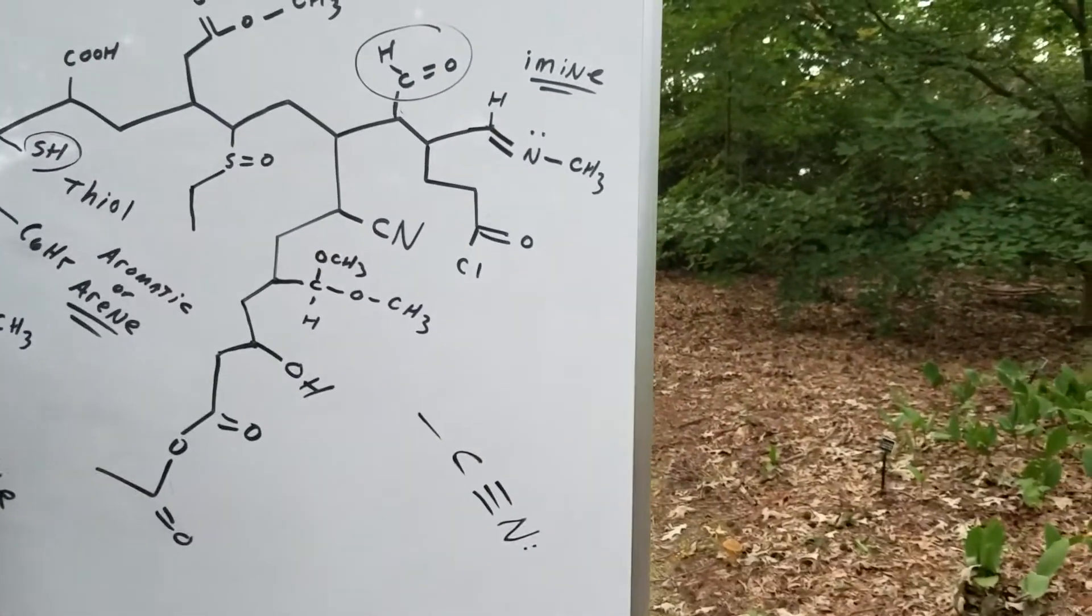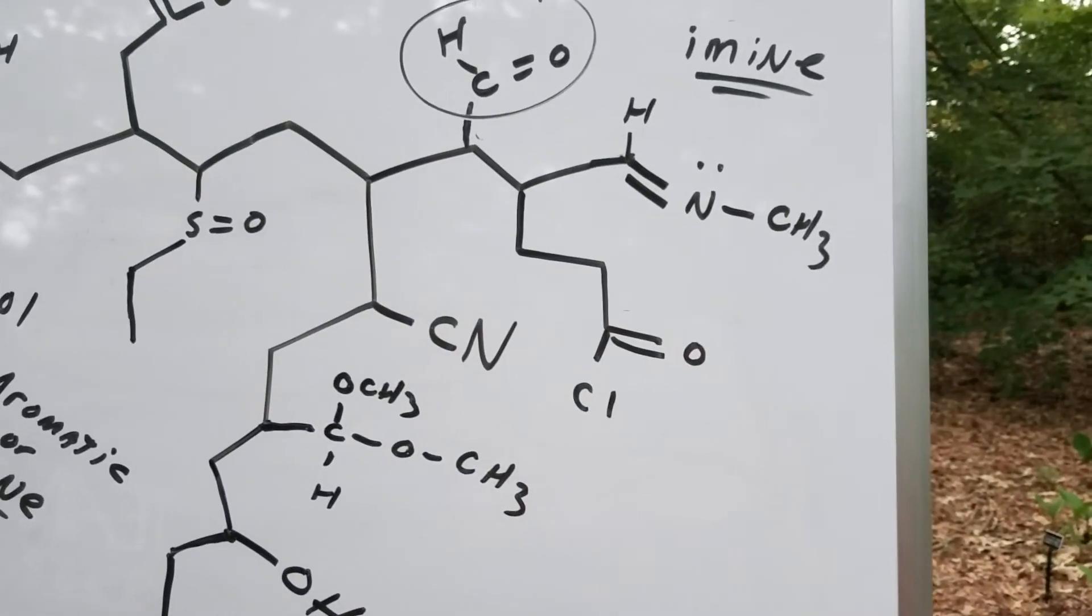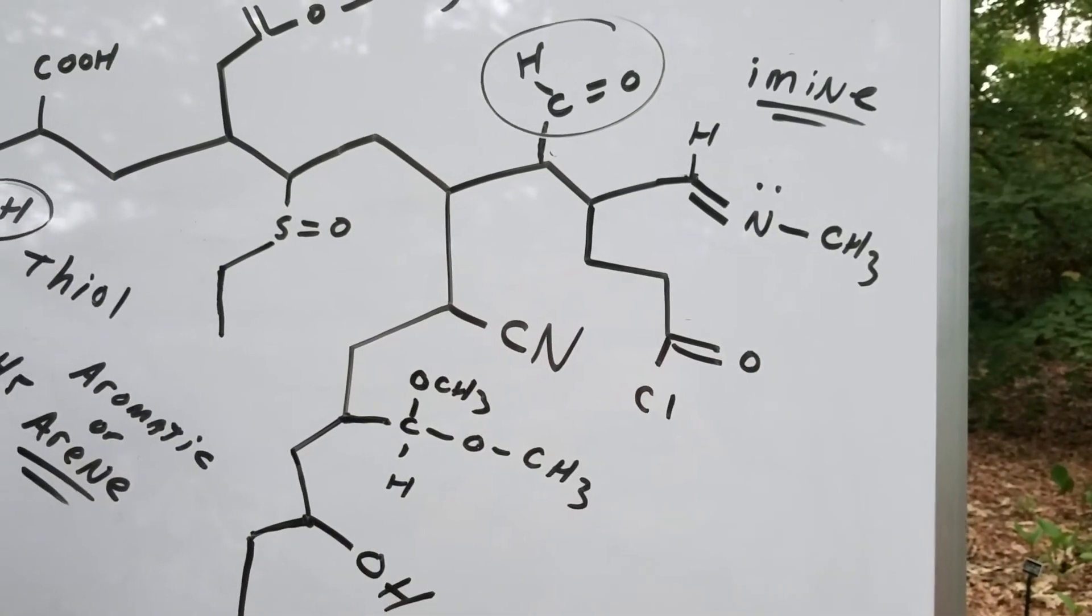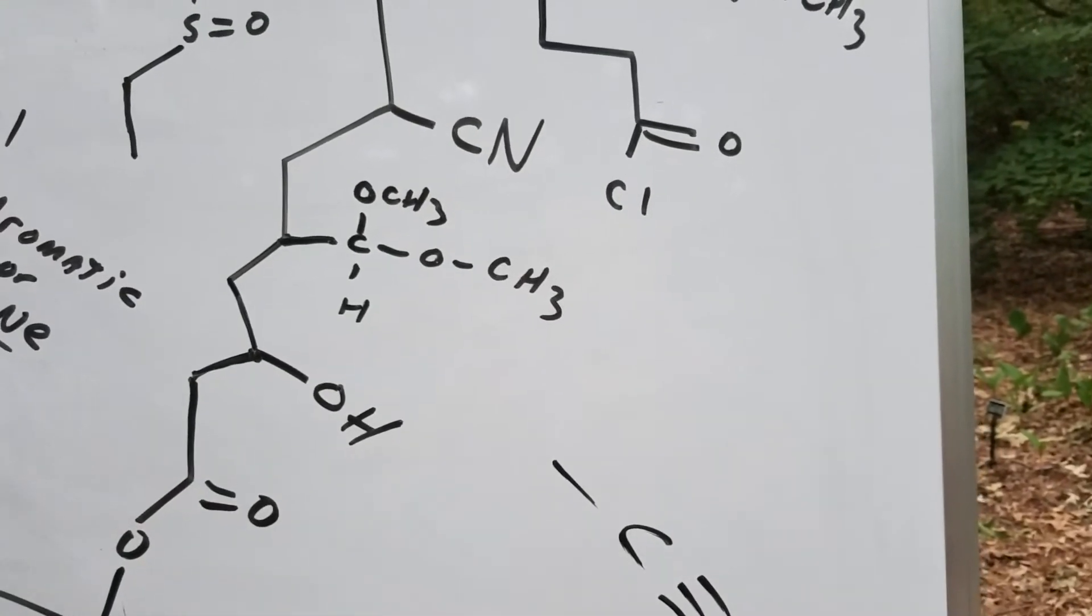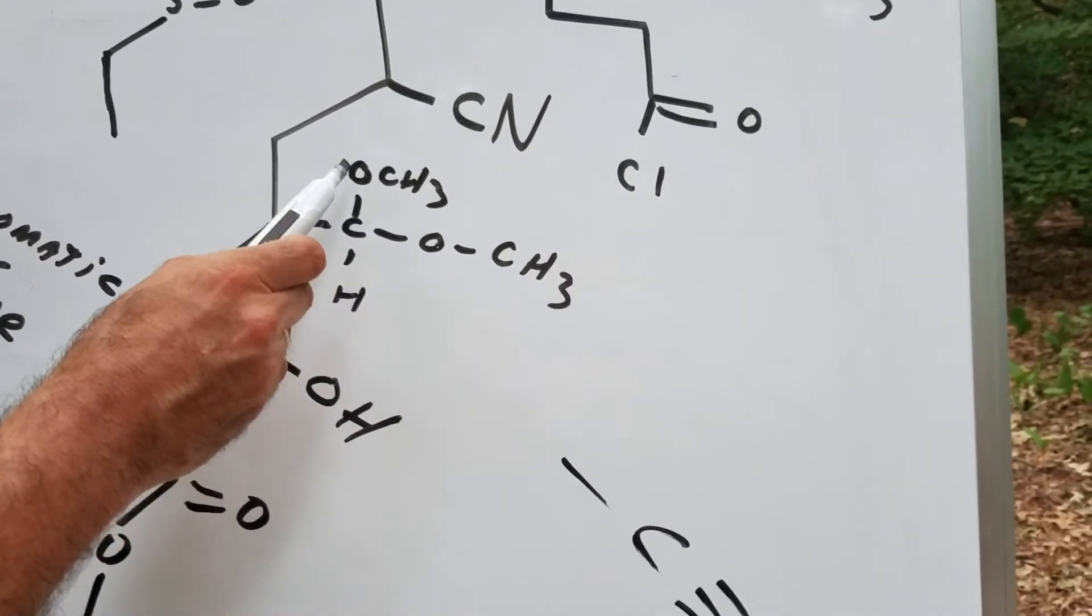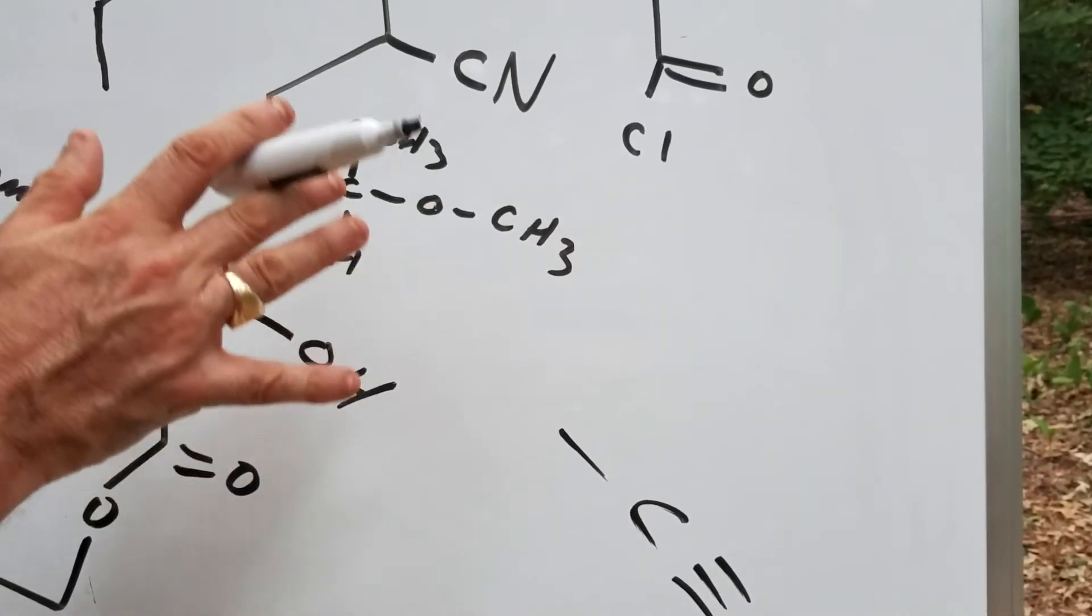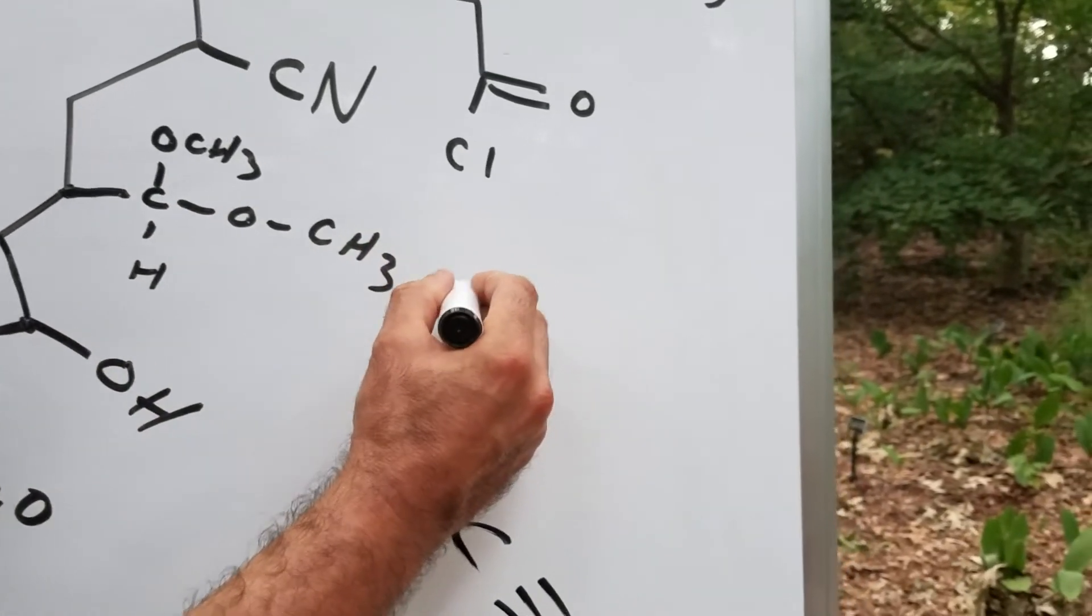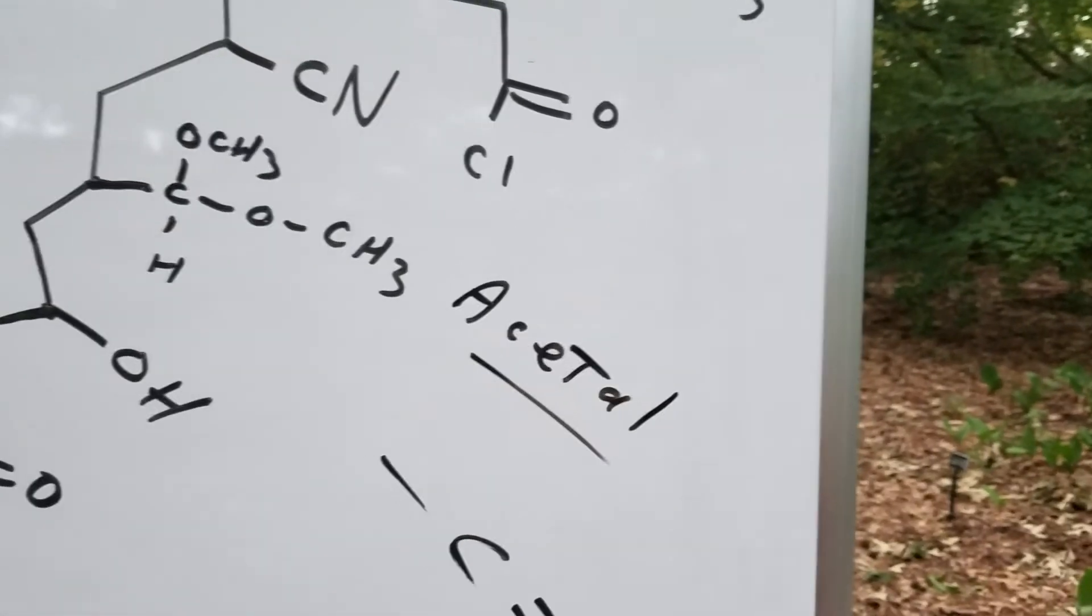This one right here is one of the most reactive functional groups in all of organic chemistry. It's called an acid chloride. So down here is an acid chloride. How about this one? This is another group that I find a lot of students don't know. Now, you focus here. This carbon has an ether here and an ether here. There's two ethers. So it's a diether linkage. But because it's on the same carbon, we call this an acetal group. So that is an acetal group.